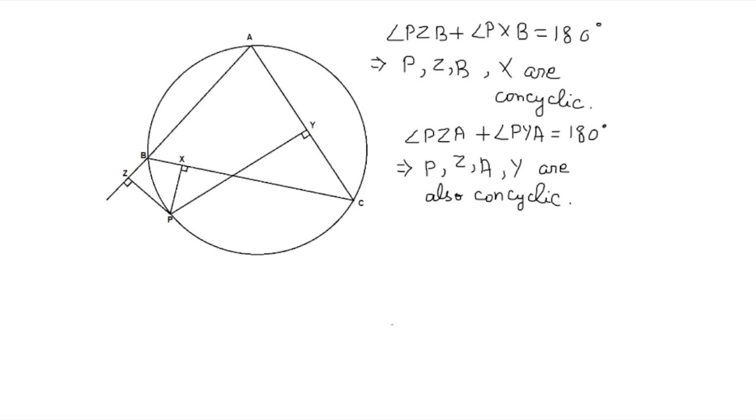Note that as we have the concyclic conditions now, it follows that angle PZX, which we want to examine, by the concyclic condition for the first four points, should be equal to angle PBX. Now PBX is same as angle PBC because BX and BC are basically on the same line.